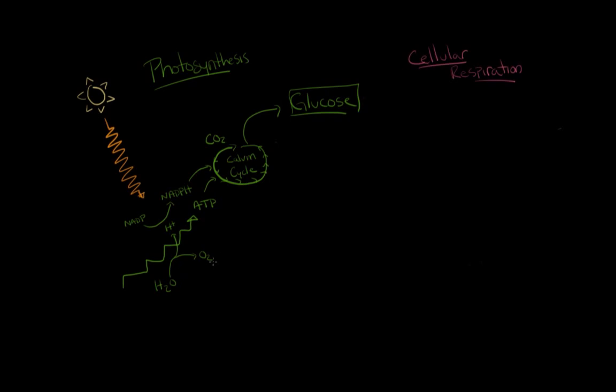In these two steps, in the light reaction and the Calvin cycle, we take the energy that's in sunlight, we store it into the bonds of NADPH and ATP, and we use those to run the Calvin cycle to store all of our energy in the chemical bonds of glucose.